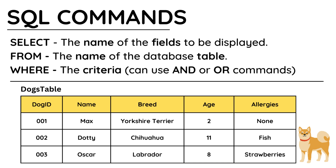As mentioned, there are only three SQL commands that you need to be able to use in the 2020 OCR GCSE specification. These are SELECT, FROM, and WHERE. The SELECT command allows you to choose which fields will be displayed. The FROM command is used to specify the name of the database table you will be searching through. The WHERE command is your criteria and can use other commands such as AND or OR to narrow down the records to be displayed.